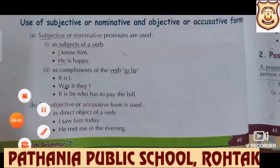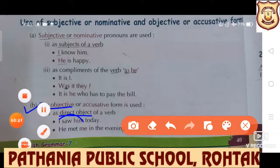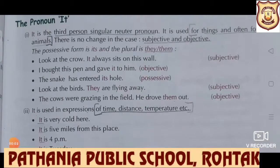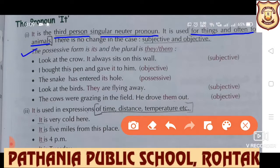The objective or accusative form is used sometimes as a direct object. 'I saw him. I hit him. I praised him. He met me. He gave me.' These are all direct objects of a verb. Next, we have the pronoun 'it'. Students, 'it' is the third person singular neuter pronoun. It is used for things and often for animals.